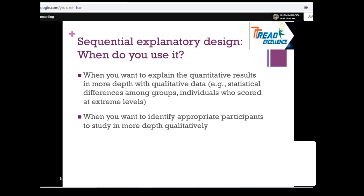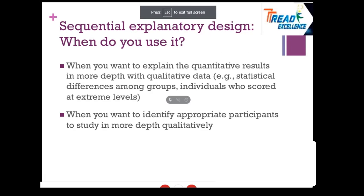When you want to explain the quantitative results in more depth with qualitative data - statistical differences among groups or individuals who scored at extreme levels, outliers - or statistical differences among groups, I have explained both of these examples. Or when you want to identify appropriate participants to study in more depth.